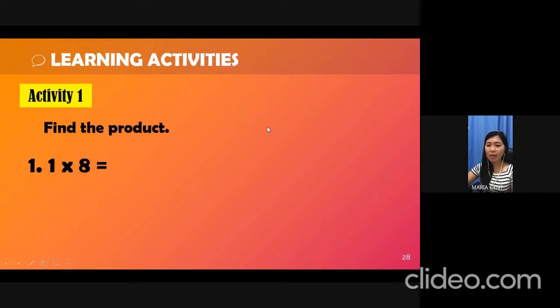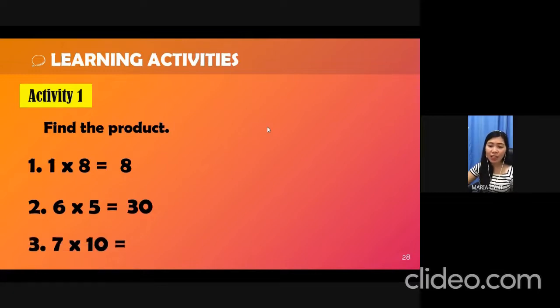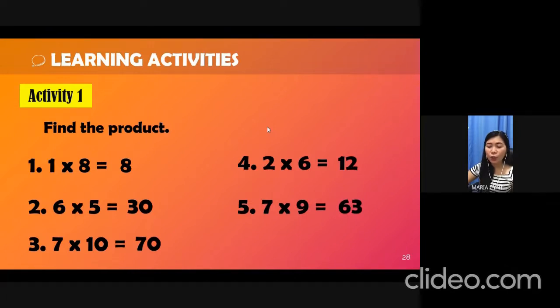Time is up. Let's check your answers. 1 times 8, that's equivalent to 8. So you just remember what you learned on rule number 1. Next, 6 times 5, that's equivalent to 30. Recall rule number 4. 7 times 10, correct? It's equivalent to 70, and that's according to rule number 2. Number 4, 2 times 6, correct? It's equivalent to 12, and that's rule number 3. And number 5, 7 times 9 is equal to 63. Recall rule number 5. Very good, you get a perfect score.